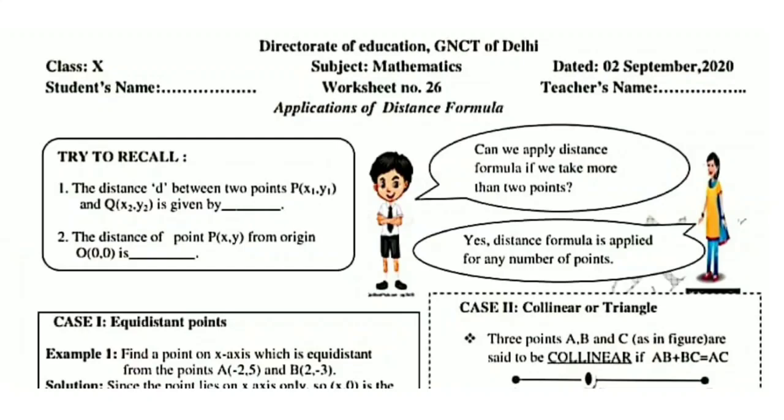Try to recall the formulas first. The distance d between two points P(x1, y1) and Q(x2, y2) is given by the distance formula: under root of (x2 minus x1) squared plus (y2 minus y1) squared. The distance of point P(x, y) from the origin O(0, 0) is under root of x squared plus y squared. This is a particular case of the distance formula. The distance formula can be applied for any number of points.